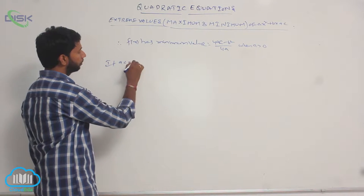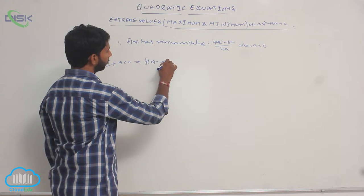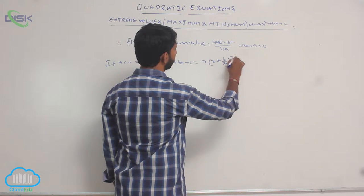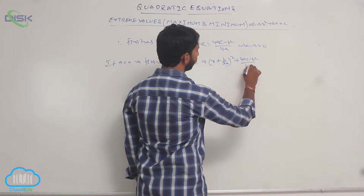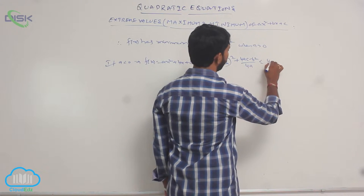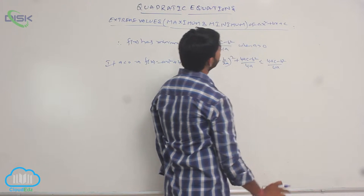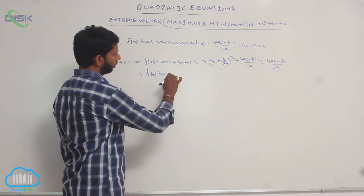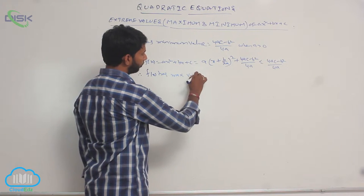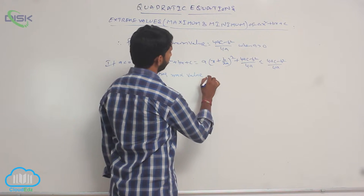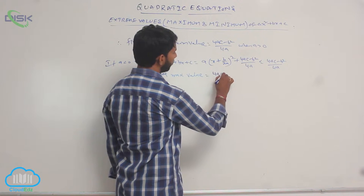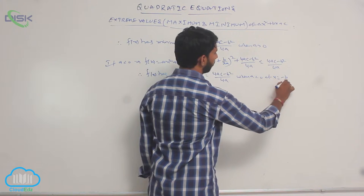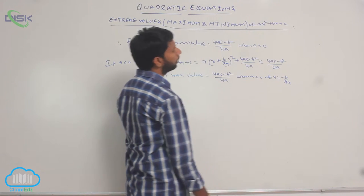Suppose if a is less than 0, that implies f of x equals a x squared plus b x plus c, which equals a of (x plus b by 2a) whole square plus (4ac minus b squared) by 4a, and this is less than or equal to (4ac minus b squared) by 4a. Therefore, f of x has maximum value equal to (4ac minus b squared) by 4a when a is less than 0, at x equal to minus b by 2a.